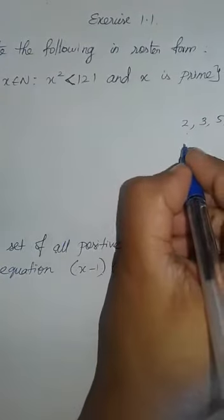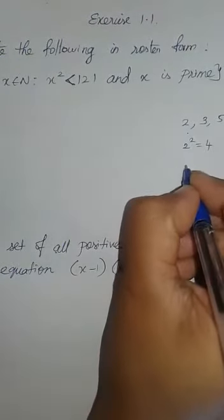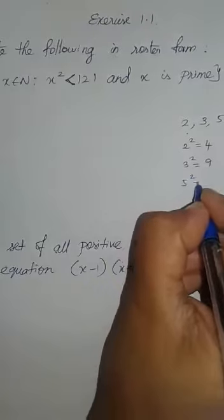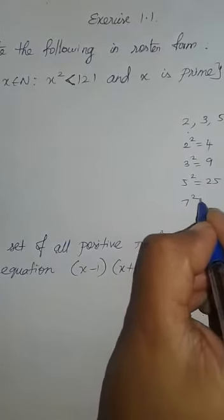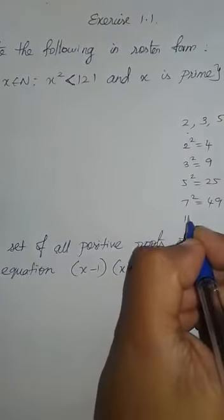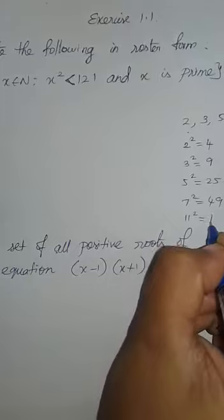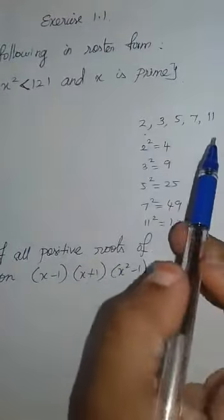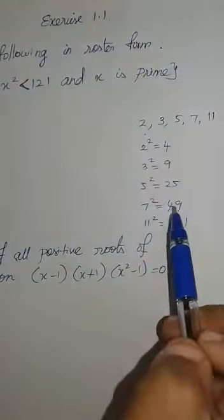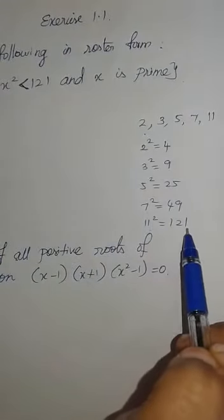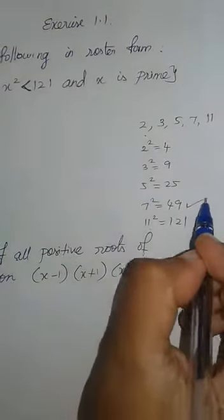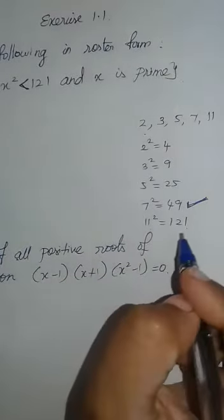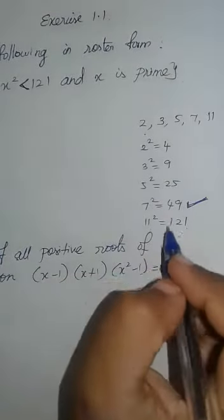When we square each prime: 2 squared is 4, 3 squared is 9, 5 squared is 25, 7 squared is 49, and 11 squared is 121. The condition requires the squared value to be less than 121, so up to 49 only satisfies the condition.